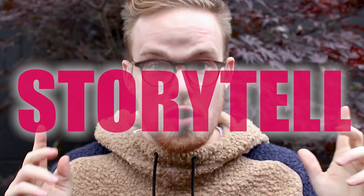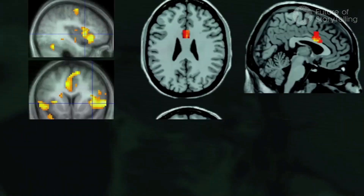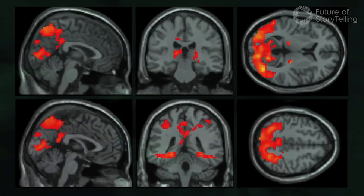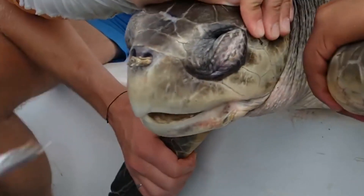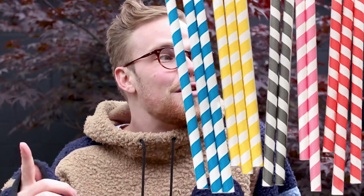Which leads to the second point: science-minded people, we're going to have to go to the local library and take a class on how to storytell. There's a neurological reason why we need stories, because the parts of our brains that react to stories are more linked to emotion and action. If you want a good example, think about the image and the story behind the straw and the turtle's nose — it created the straw revolution.